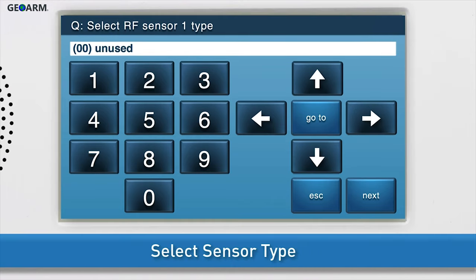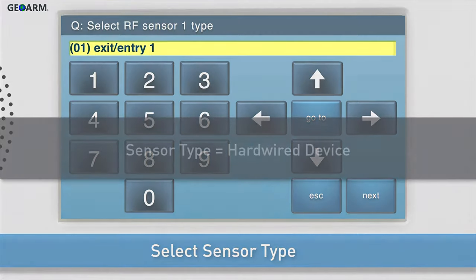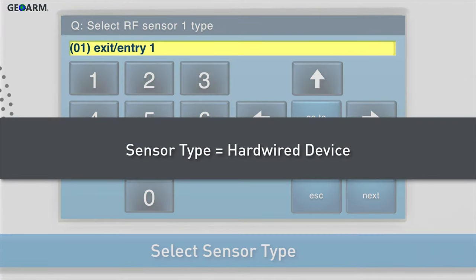Select the sensor type. There are two ways to change the sensor type. Option 1: Press the right arrow to scroll through the various sensor types. Option 2: Use the on-screen keypad to type in the two-digit code for the desired sensor type. Select the sensor type that corresponds to the hard-wired device you are converting.